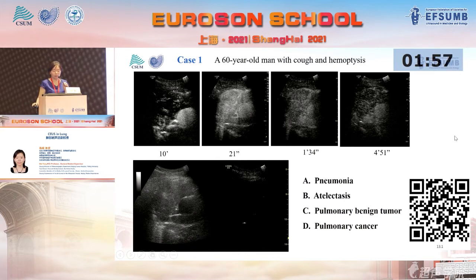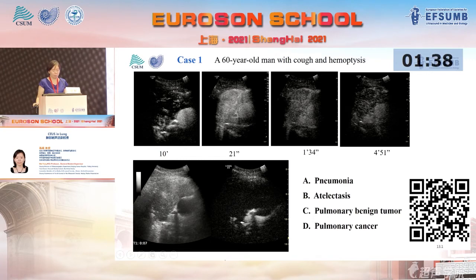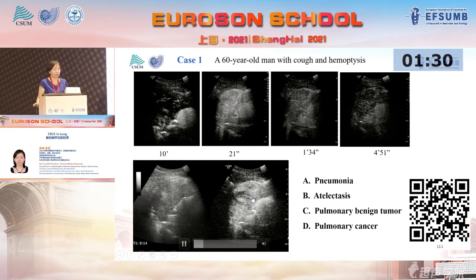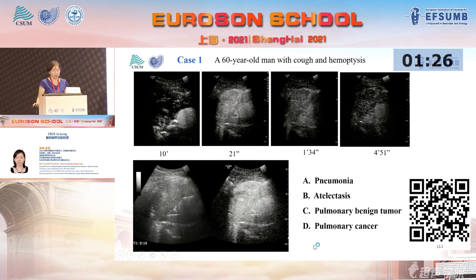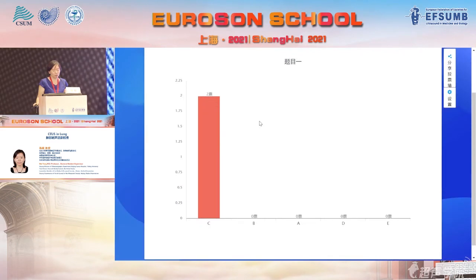Now we move to the question session. An older man presents with cough and hemoptysis. Look at the contrast ultrasound video. This area is the lung hilum. Around 11 seconds, the hilum starts to enhance — homogenously and from peripheral to center. We can see some disordered tumor vessels. And now we can see washout starting. So what is your diagnosis?